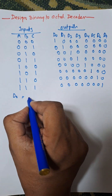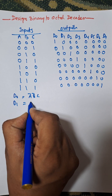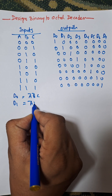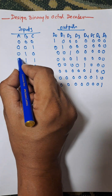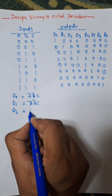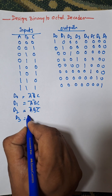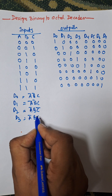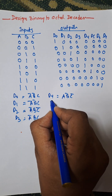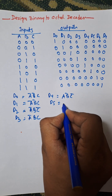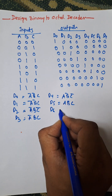For D0, the Boolean expression will be A-bar B-bar C-bar. For D1, the Boolean expression is A-bar B-bar C, that is 001. For D2, that is A-bar B C-bar. For D3, that is A-bar B C. For D4, that is A B-bar C-bar. For D5, that is A B-bar C.